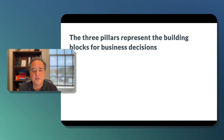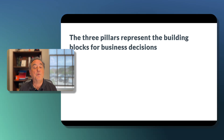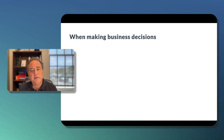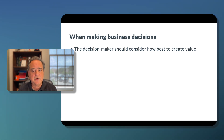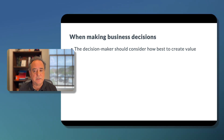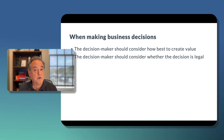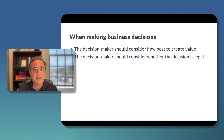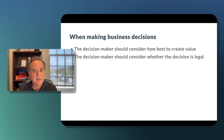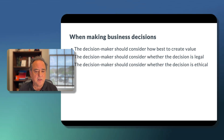The three pillars represent the building blocks for business decisions — this is how we go through the decision-making process. When making business decisions, the decision-maker should first consider how best to create value and develop a strategy to create value. The next step is to consider whether the strategy reached is legal and complies with the law. And if it does, then we turn to the third pillar: is the decision ethical?